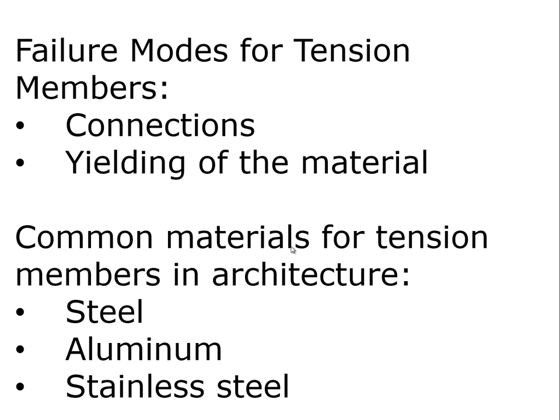The two failure modes for tension members are either failure of the connections — which is often a very challenging part of the problem — or yielding of the material in the tensile member. The common materials for tension members in architecture are steel, aluminum, stainless steel, and high-strength steel, which we will address in our discussions later on. High-strength steel cable is a fairly common and important building material.